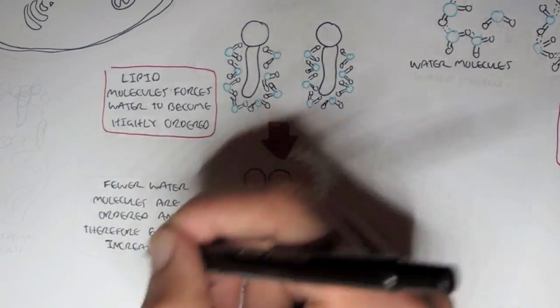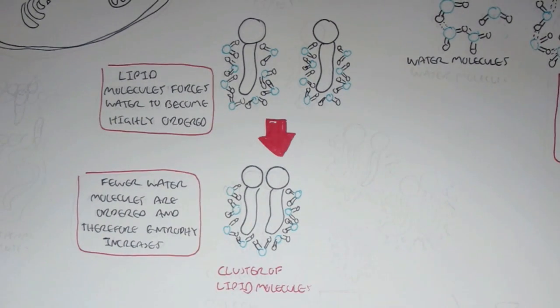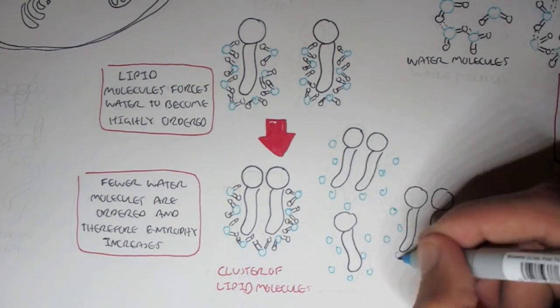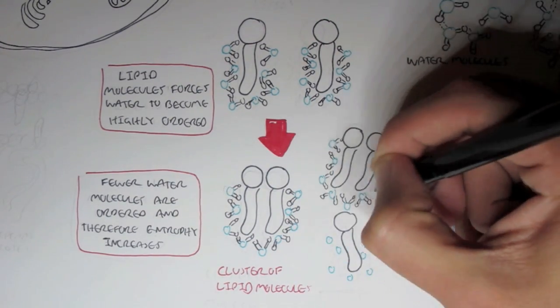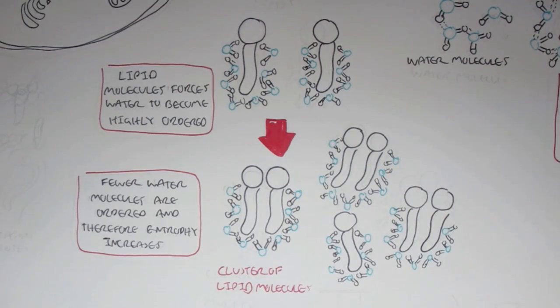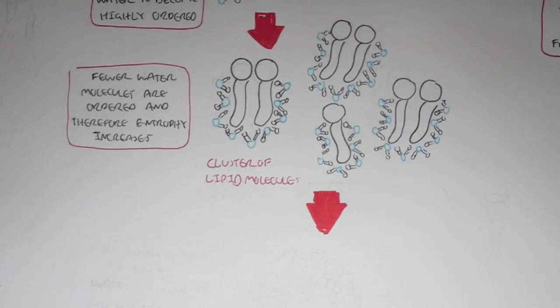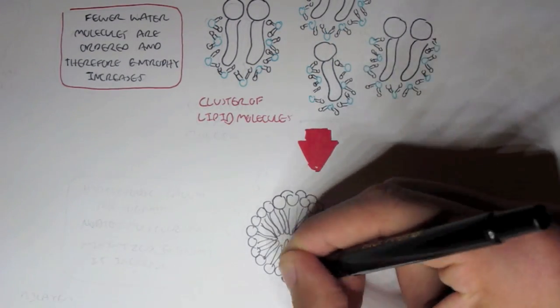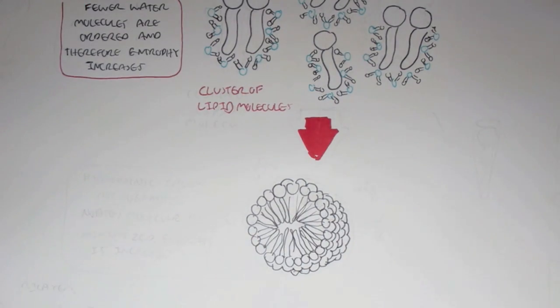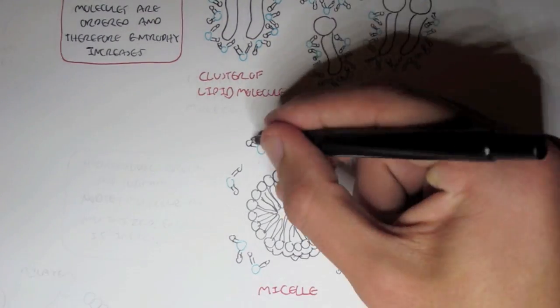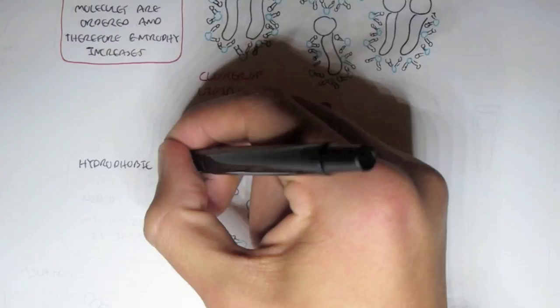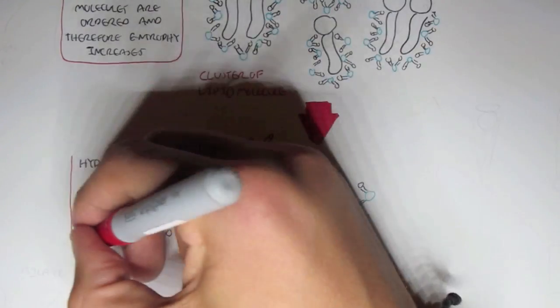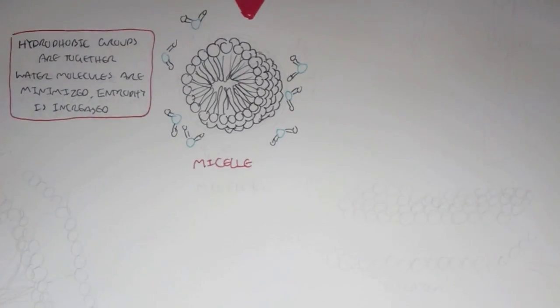Because the alkyl group is hydrophobic, this means that the hydrocarbon chain will force water molecules to become highly ordered. So it uses energy. So what happens if we combine these two lipids together to form cluster of lipid molecules? Well this means that fewer water molecules are ordered and therefore entropy increases. Because the water will now only part of the water will surround the lipid structure and will not be in the middle because the lipid will prevent this.